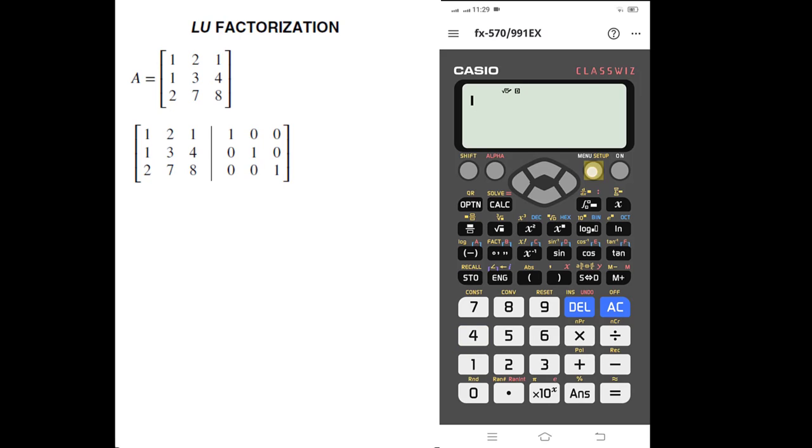First, select the matrix mode by pressing 4 and we will define matrix A. We need a 3x3 matrix as it is enough for our entries. So I will write the first row in matrix A: 1, 2, 1, 1, 0, 0.